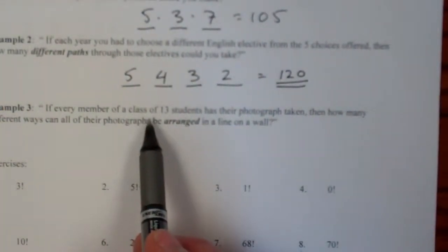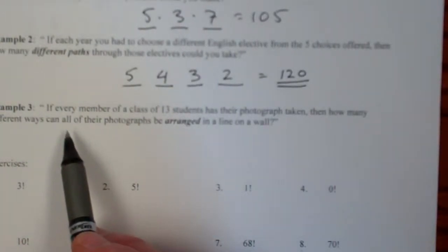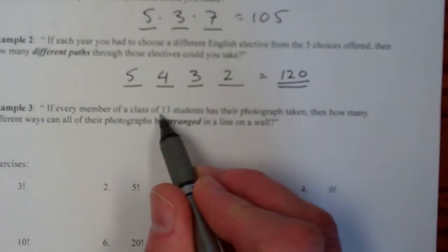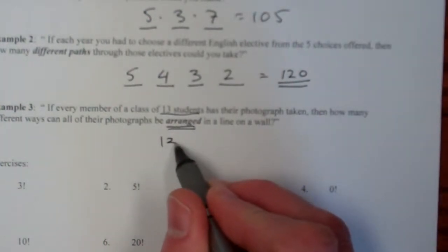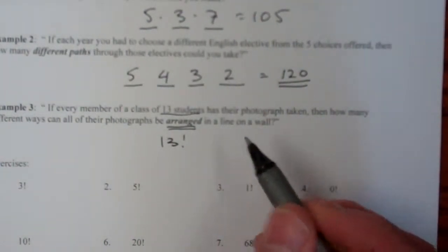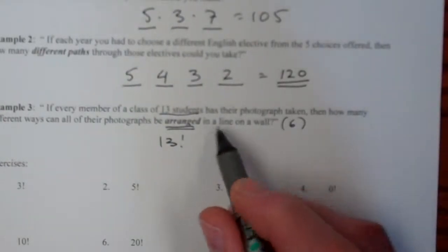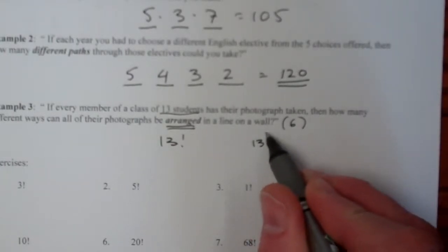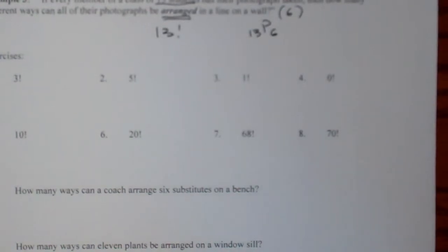If every member of a class of thirteen students has their photograph taken, then how many different ways can all of their photographs be arranged on the wall? So I've got thirteen students, and arranging means they're in a particular order. So that's going to be thirteen factorial. If we were only going to hang up, say, six of them, and we've got thirteen students to choose from, that would be then thirteen P6. So you should be able to do these. They're pretty straightforward. Good luck.